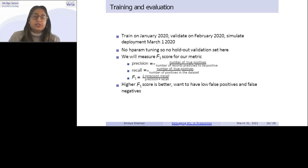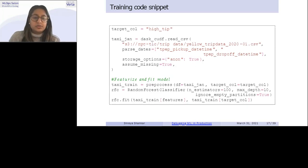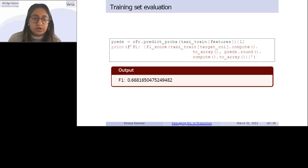So we train on some months. So for example, January, 2020, we evaluate, validate, sorry, on the next month, February, 2020. And then we simulate the deployment March 1st onwards. And you'll notice that, the, this coincides pretty strongly with the onset of the pandemic. So we'll see some of the regression here. There's no hyperparameter tuning. So I don't have a holdout validation set for that. And we use F1 score for our metric, which is essentially a combination of precision and recall. And to reason about this at a high level, a higher F1 score is better because we want to have a few false positives and false negatives.